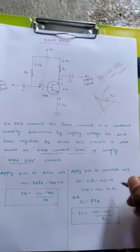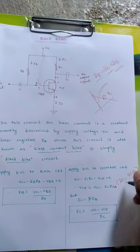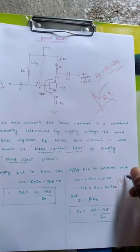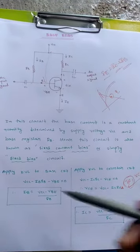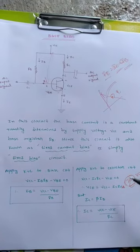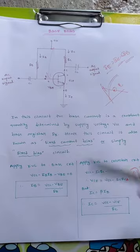The Q point contains IC and VCE, which we have to maintain. To maintain IC, we need to control IB. Using the resistance, we can control the IC value. That's why it's called fixed current bias or fixed resistance bias.